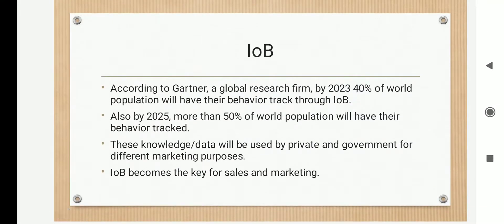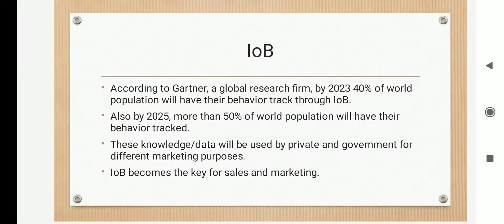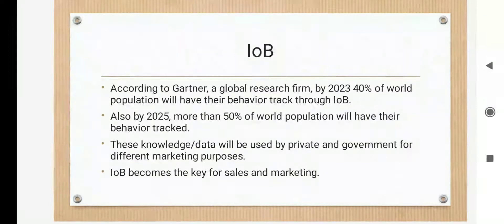According to Gartner, a global research firm, by 2023, 40 percent of the world population will be subjected to IOB — that is, 40 percent of people's information will be tracked and recorded. And by 2025, showing an increase of 10 percent, 50 percent of the world population will be subjected to IOB. So IOB is going to be the key for sales and marketing.